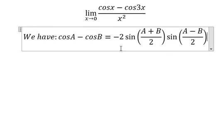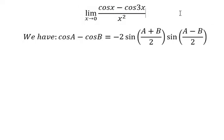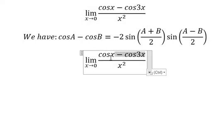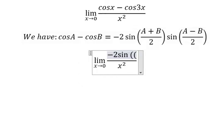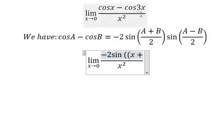So we apply this formula for this one in here. We will have negative 2 sine of, where A is x and B is 3x.